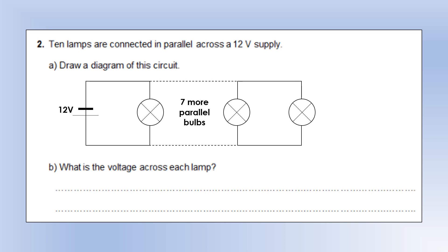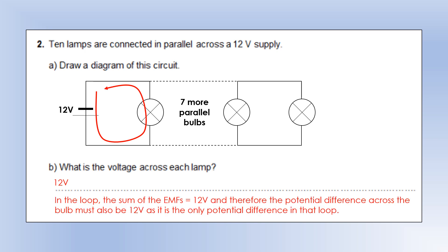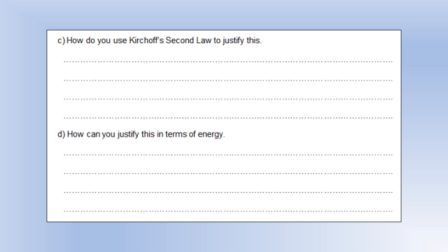Now 10 lamps are connected in parallel. I've drawn a shortcut version giving 10 bulbs in parallel across a 12 volt supply. The voltage across each lamp is 12 volts. Using Kirchhoff's second law: the sum of the EMFs is 12 volts, so the sum of the potential differences must be 12 volts, and the light bulb is the only potential difference in that loop, so it must be all 12 volts.